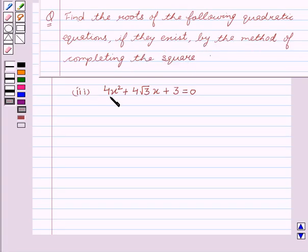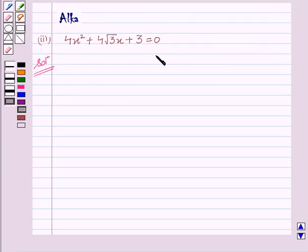Our given equation is 4x square plus 4 root 3x plus 3 equal to 0. Let's start with the solution.